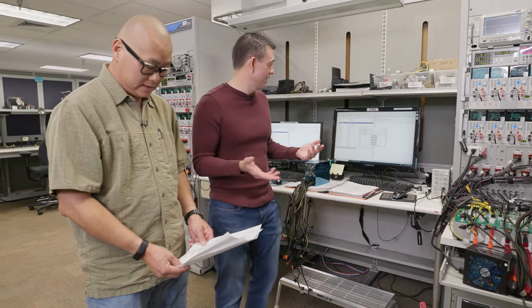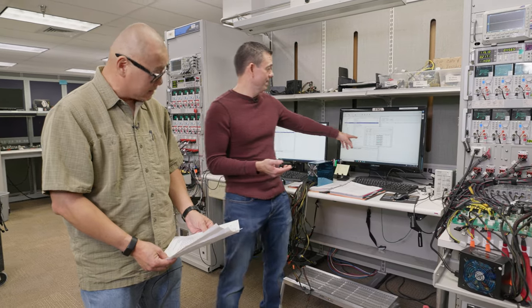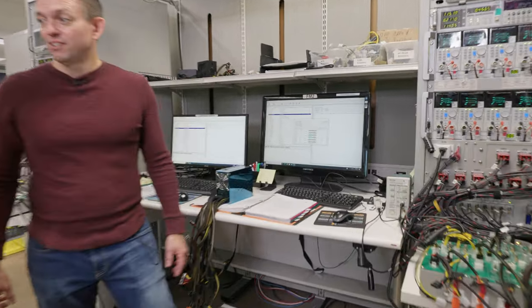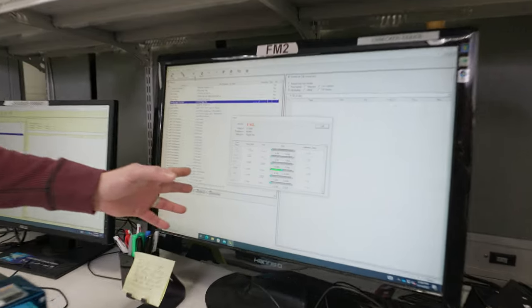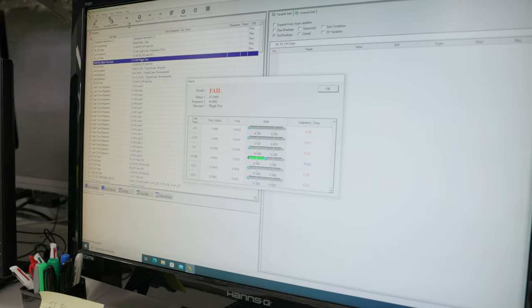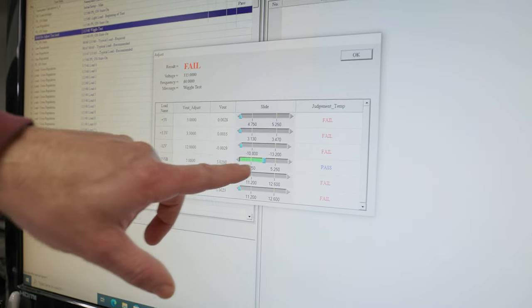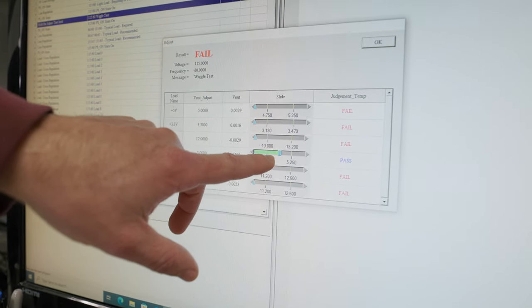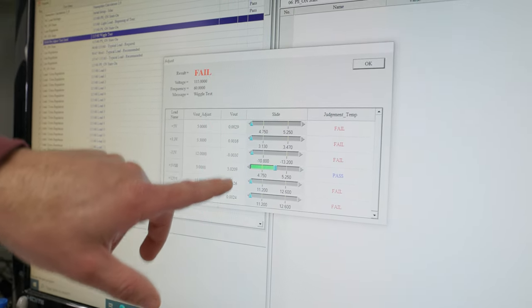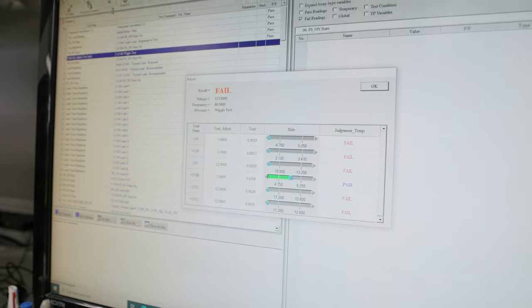I don't understand what this means. Peak power excursions required, not tested. Okay, I passed this. AC line regulation. Yeah, yeah. That just means the power supply turns on. But it didn't turn on.